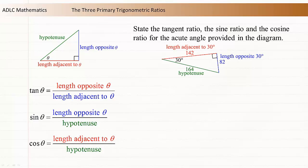The length 142 is adjacent to the 30-degree angle because it is a short side and one end touches the 30-degree angle. The length 82 is opposite the 30-degree angle because neither end touches the 30-degree angle. The length 164 is the hypotenuse because it is the longest side and it is across from the right angle.